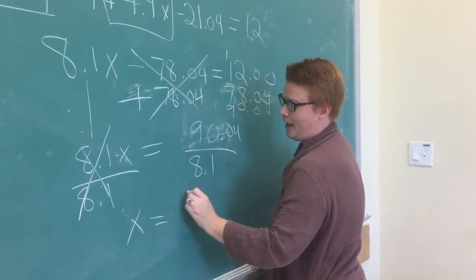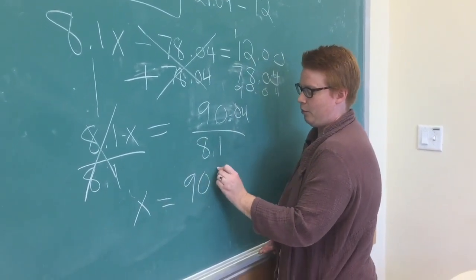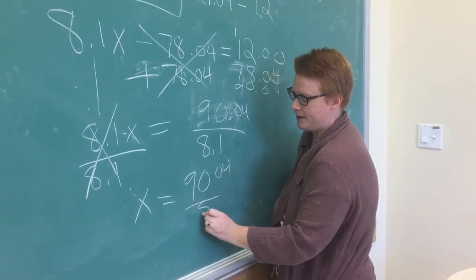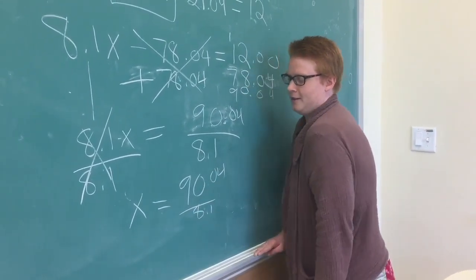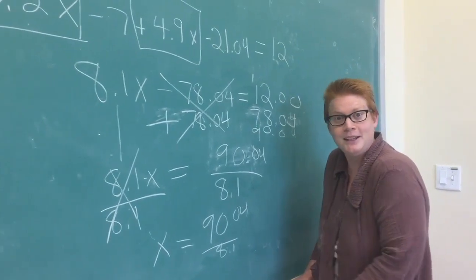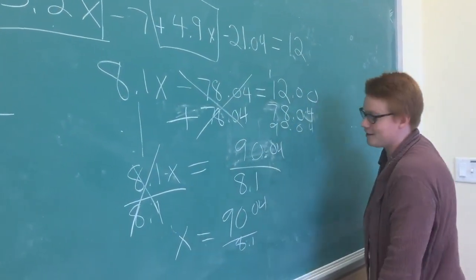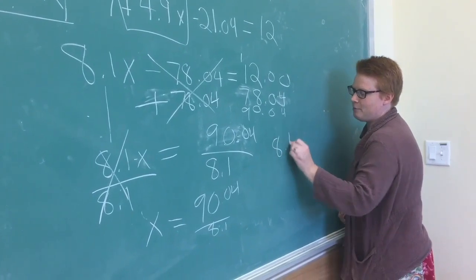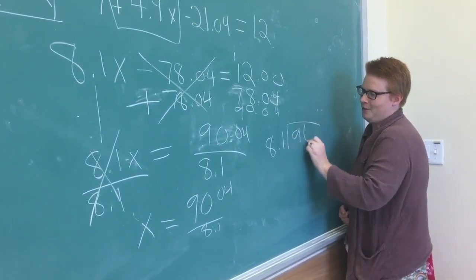Technically, if you want to, you could even say this is whatever 90.04 divided by 8.1 is. You could. That's fine. Or you can make a calculator deal with it for you. But I'm going to deal with it because I can. Why not?